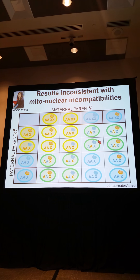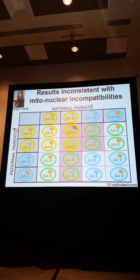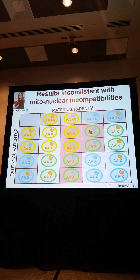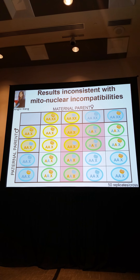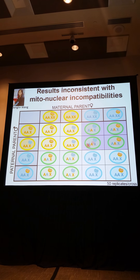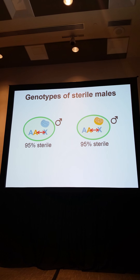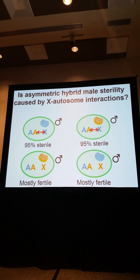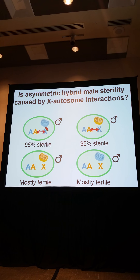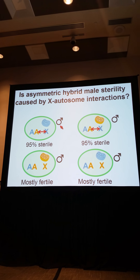If hybrid male sterility is caused by mitonuclear incompatibilities between remanei mitochondria and the latens autosomal genome, then it's a specific set of males — highlighted in red — that we'd expect to be sterile, while the white males should be fertile. What we actually found was a different set of males were sterile. Looking at the genotypes of the sterile versus fertile males, we concluded it's more likely an X-autosome incompatibility, because what the sterile males have in common is the remanei X chromosome.